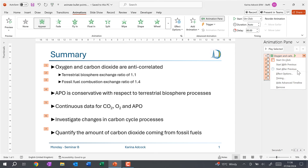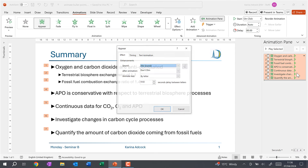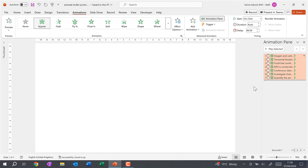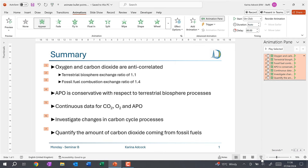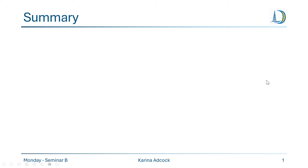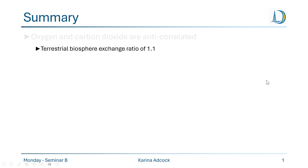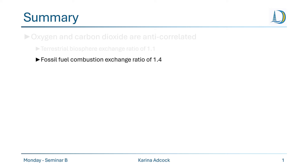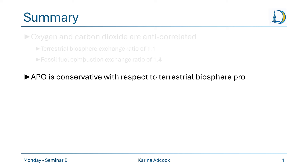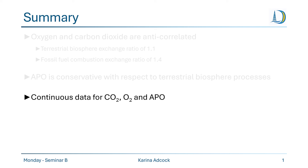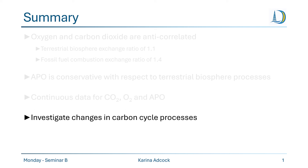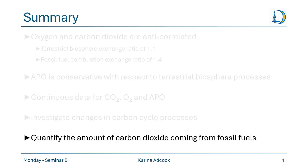We can also go to Effect Options and for After Animation, change it from Don't Dim to Grey, then click OK. Now when we look at the presentation, each time I click a new bullet point will appear and the previous bullet point will change to grey. This is another way of focusing the audience's attention on each of the bullet points one at a time.